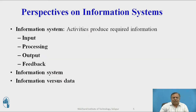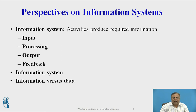Information system activities produce required information. Input captures raw data from the organization or external environment. Processing converts data into meaningful form. Output transfers processed information to people or activities that use it. Feedback is output returned to appropriate members of the organization to help evaluate or correct the input stage. Environmental actors such as customers, suppliers, competitors, stockholders, and regulatory agencies interact with the organization and its information system.